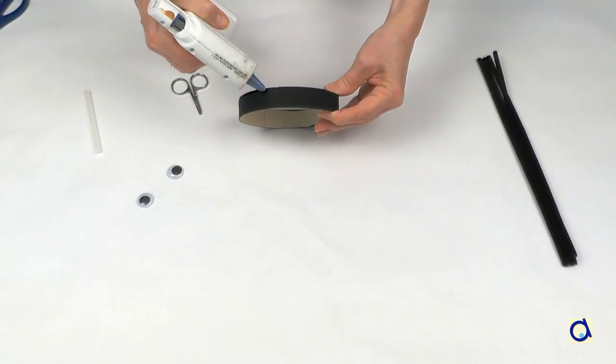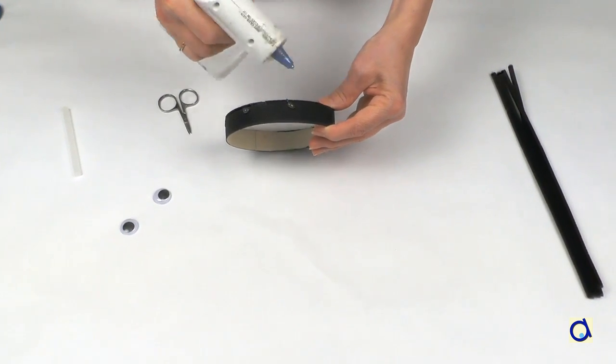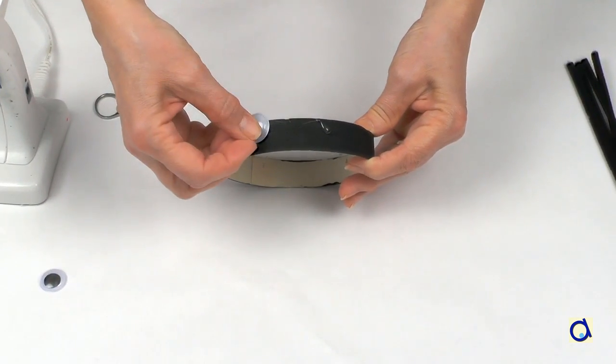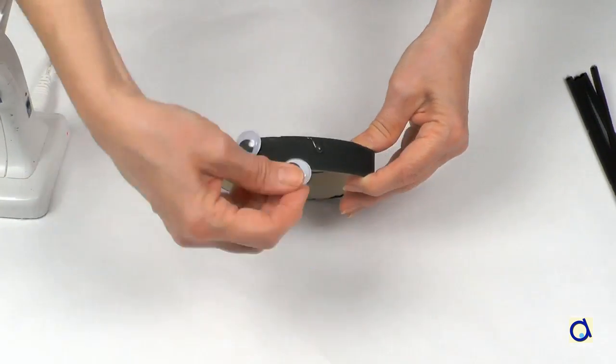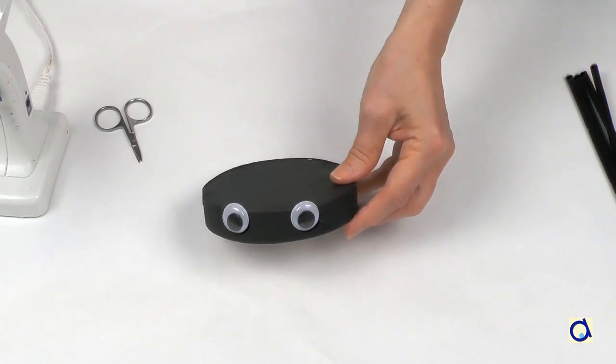Take googly eyes and glue them on the edge of the box. I used the glue gun, but you can also use white glue. The only difference is that white glue will take longer to dry than hot glue.